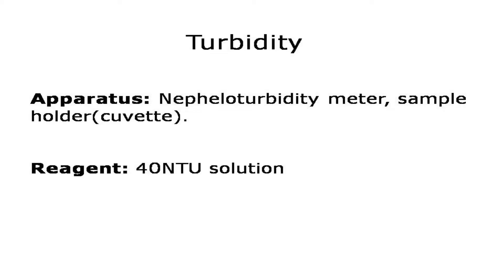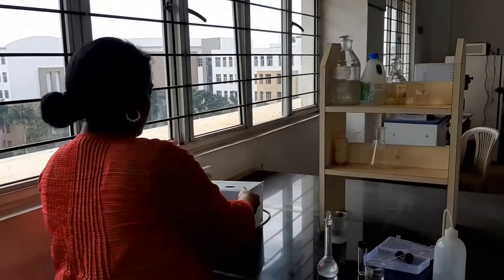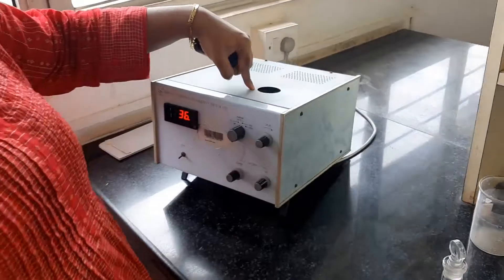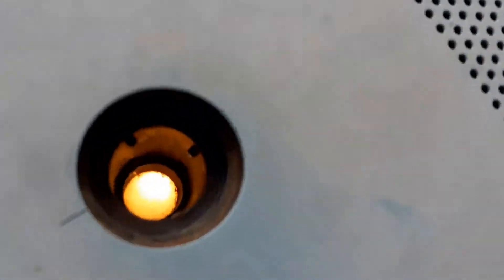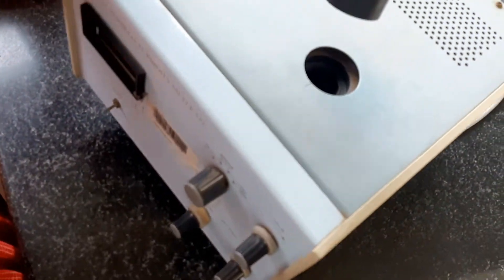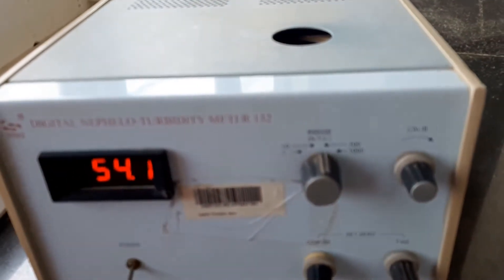Today we are going to calculate the turbidity of a given sample of water. For that we use a turbidity meter. When you put it on, there is a light source. We will be putting our sample solution here and then seeing what is the amount of dispersion in a liquid.